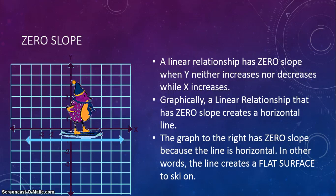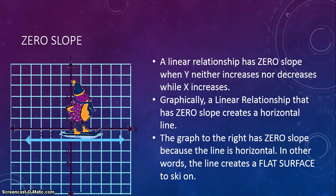Zero slope: a linear relationship has zero slope when y neither increases nor decreases while x increases. Graphically, a linear relationship with zero slope creates a horizontal line — a flat line from left to right. The graph to the left has zero slope because the line is horizontal, creating a flat surface that the penguin can ski on.